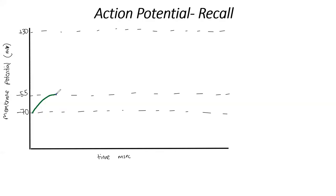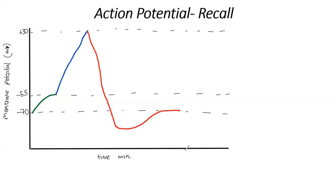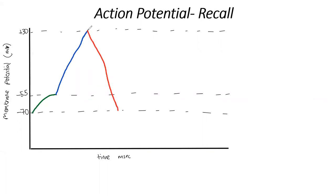Then we have the rapid upstroke of the action potential. Then we've got the opposite events where things kind of flip flop at positive 30. Then we've got the rapid downstroke — we go all the way down past negative 70 at this point, and then we overshoot and get back to negative 70.